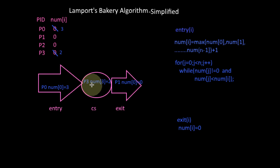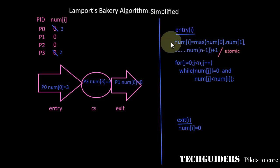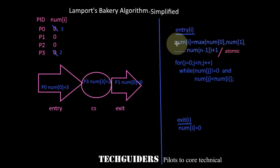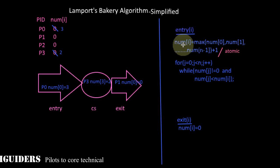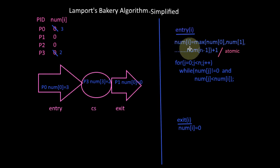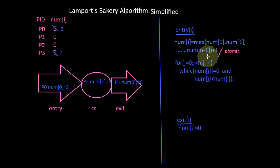This is how the basic algorithm works, but here we must assume that the number-calculation instruction is atomic — that is, if one process has started calculating its number, it cannot be preempted. If every process receives a different token number, the algorithm works on a first-come-first-served basis. But what happens if this operation is not atomic? More than one process may generate the same token number.